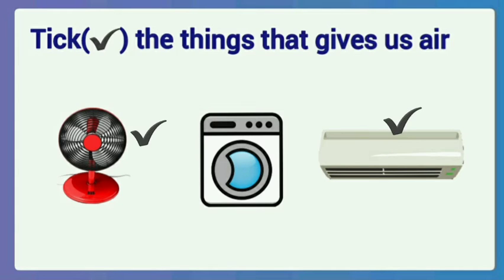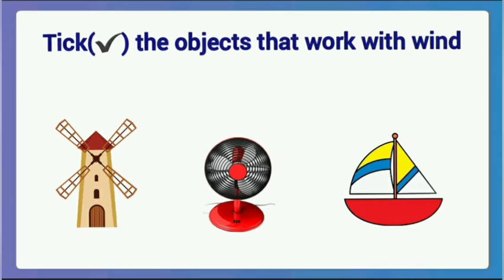Okay, then next one. Tick the objects that work when there is wind. Here, we want to tick the objects that work with wind. What are they? Tick windmill and sailing boat.